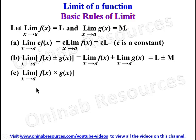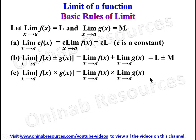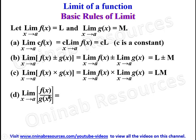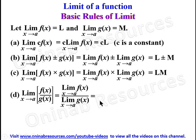The third rule: the limit of f(x) times g(x) as x tends to A. The limit of the product of two functions is the same as finding the limit of each function separately as x tends to A and multiplying them, giving L·M. The fourth rule: the limit of f(x) over g(x) as x tends to A. Find the limit of the numerator and the limit of the denominator separately, then divide them, giving L over M.